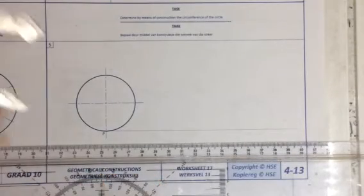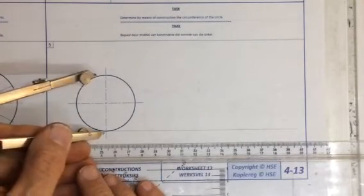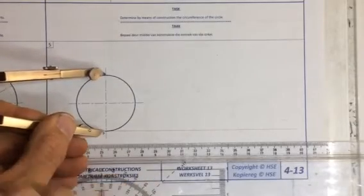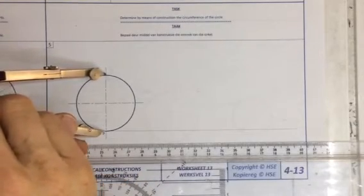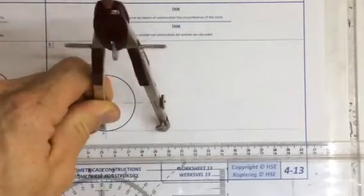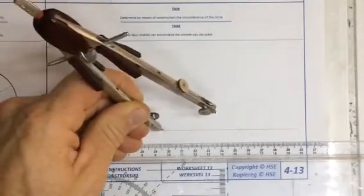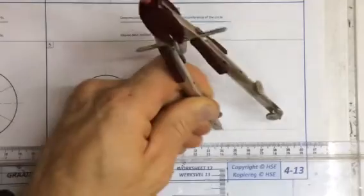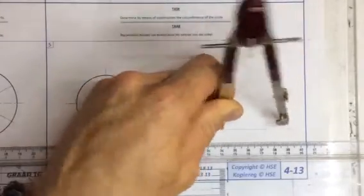I then take my pair of compasses, I set them to exactly the length of the diameter of that circle and I arc it down onto the line once, twice, three times.